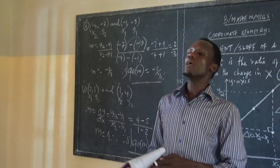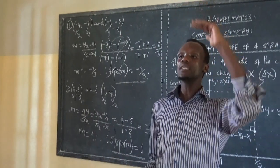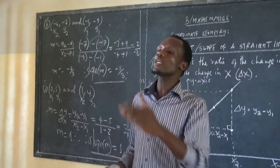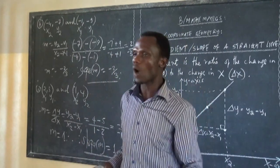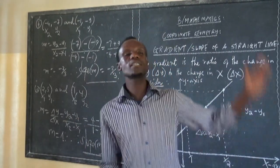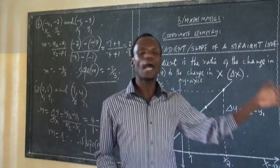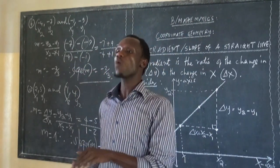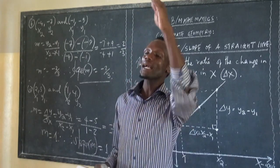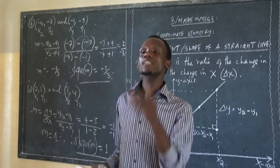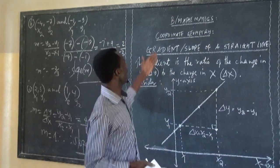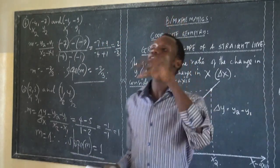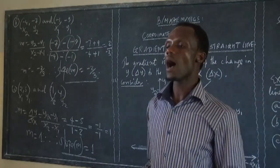That is how we determine the slope. You have to know that slope equals change in y over change in x. Choose the points you've been given, decide which is point 1 and which is point 2, label them x1, y1, x2, y2, then calculate y2 minus y1 over x2 minus x1. By definition, gradient or slope is the ratio of the change in y to the change in x. That's it for slope.